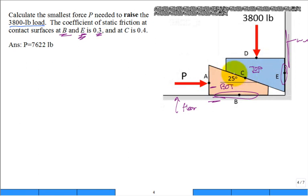There's a contact between the two wedges right here at C, and it has a different coefficient of static friction - its value is 0.4. That's a lot to digest, and we have a 3,800 pound load applied to the top wedge downward.